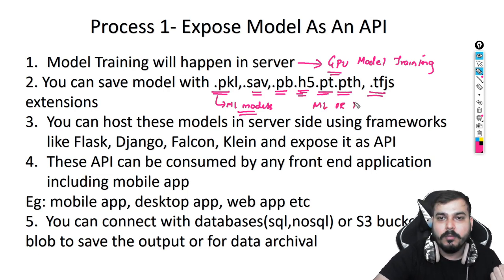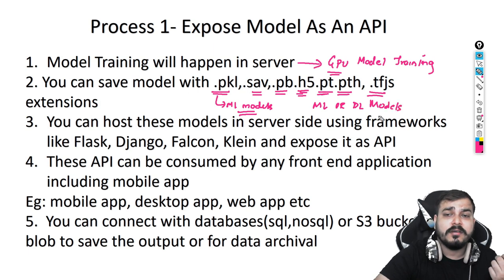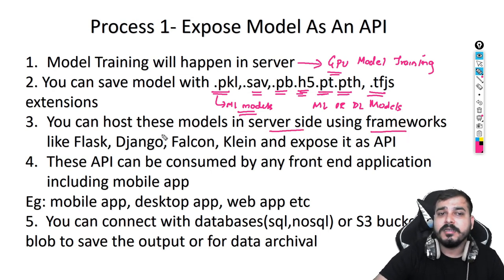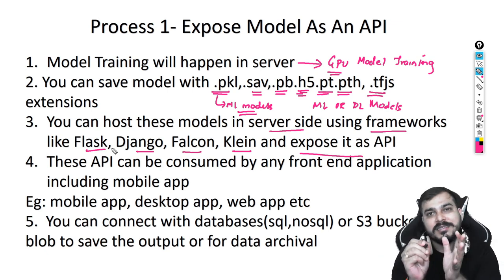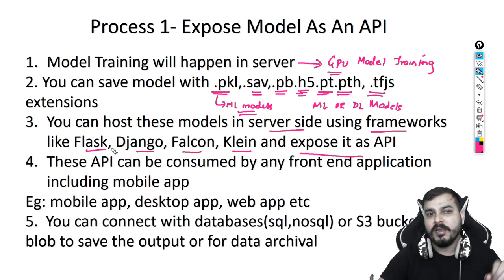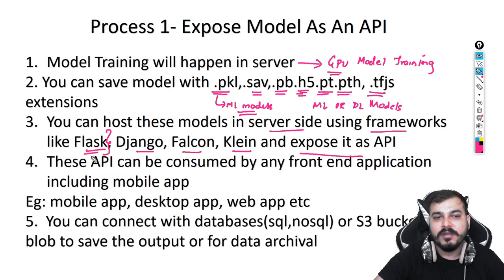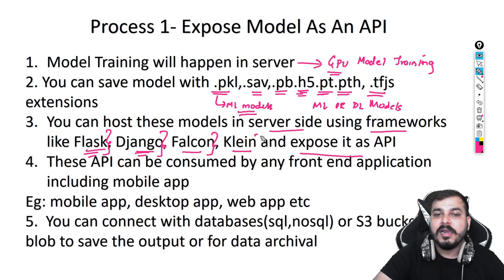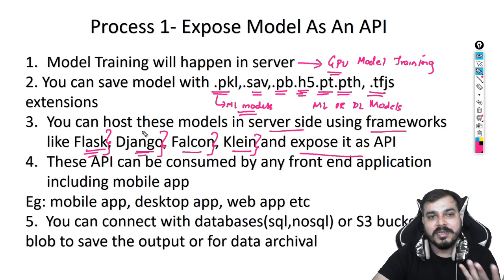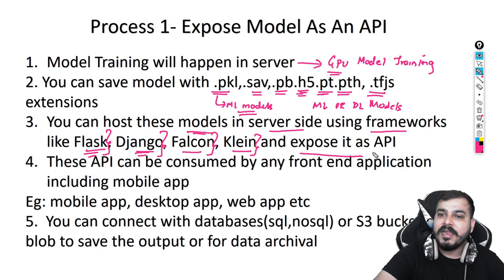It can be ML or deep learning models. The next step — step three — is to host these models on the server side using frameworks like Flask, Django, Falcon, or Clean, and expose them as an API. These web frameworks are used to create web applications and also to create APIs. Since our APIs need to be exposed to the front-end application, we can use Flask, Django, Falcon, or other frameworks. Finally, it will be exposed as an API.